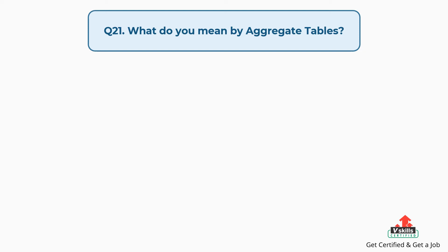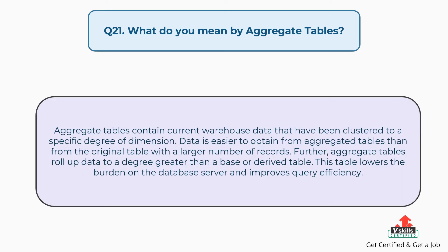Question number twenty-one: What do you mean by aggregate tables? Aggregate tables contain current warehouse data that have been clustered to a specific degree of dimension. Data is easier to obtain from aggregated tables than from the original table with a larger number of records. Aggregate tables roll up data to a degree greater than a base or derived table, lowering the burden on the database server and improving query efficiency.